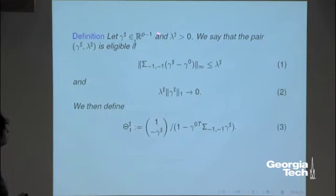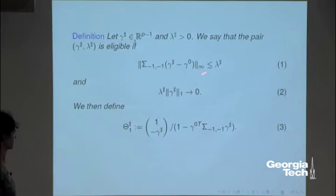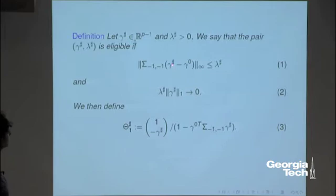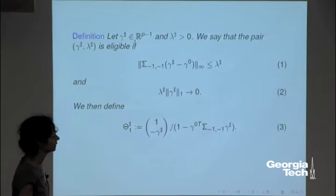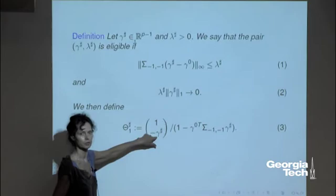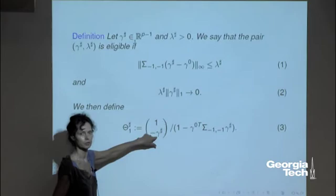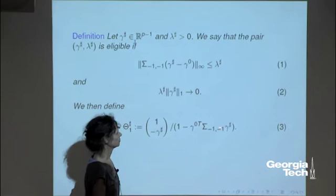Now let's start with sigma known. I'm going to assume that we have an eligible pair: gamma^0 is the true projection, which may not be sparse, and I'm going to approximate it by something which is sparse in the L1 sense. Lambda-sharp is small, depending on the situation, and gamma-sharp is something sparse. If both conditions hold simultaneously, we call this an eligible pair. For such a pair, we can mimic the first column of the precision matrix: take (1, minus gamma-sharp) and divide by the residual sum of squares — the residual from projecting x_1 on x_{-1} using the sparse approximation.